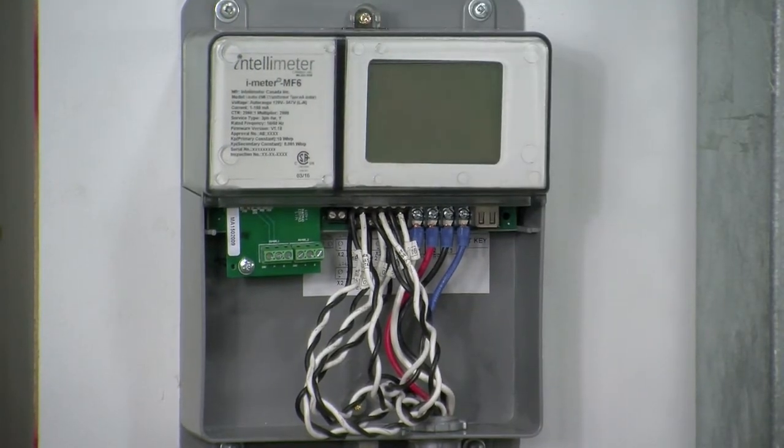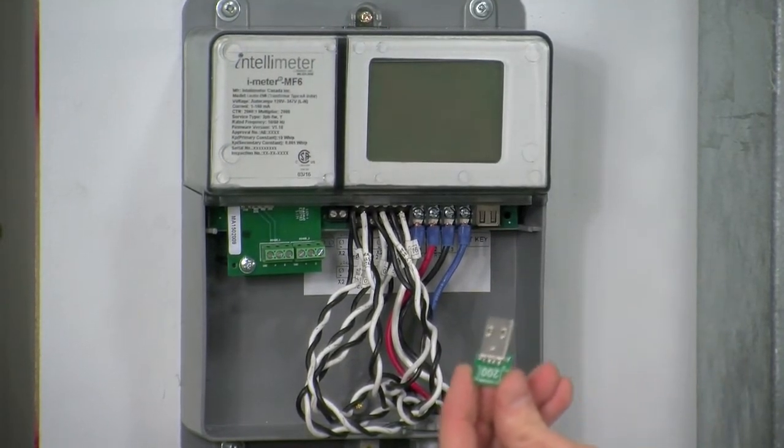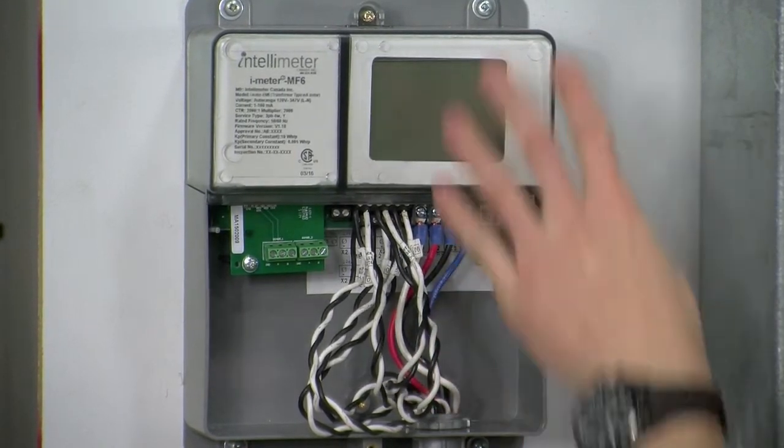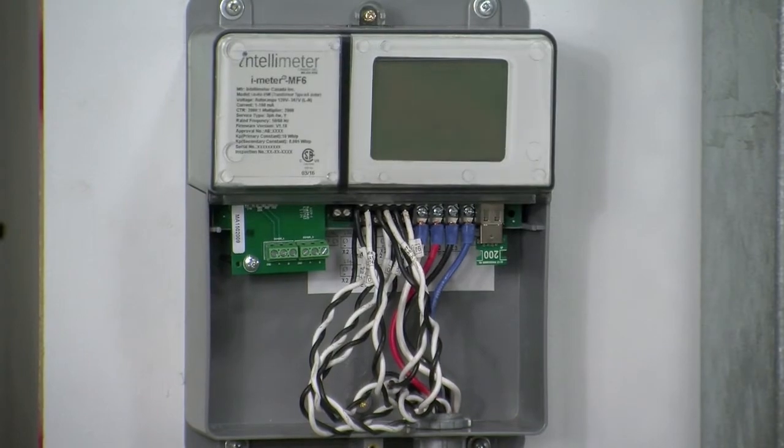Now, very last thing, we have our CT programming USB dongle. So, this, you simply just insert it into the CT key slot. This will tell the meter which CTs is being used with it.